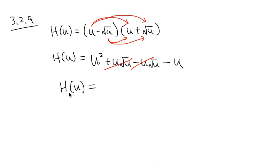But, secretly, h of u is u squared minus u. This is how innocent the function looks like, alright? Nothing crazy, it's just u squared minus u.